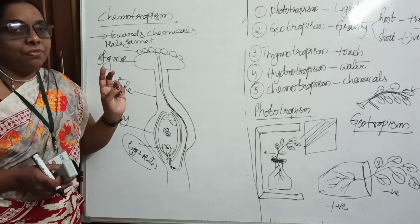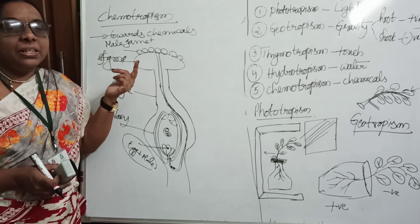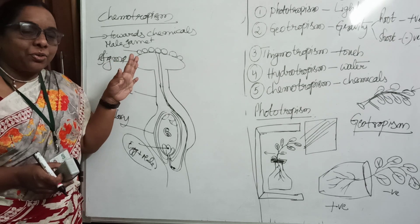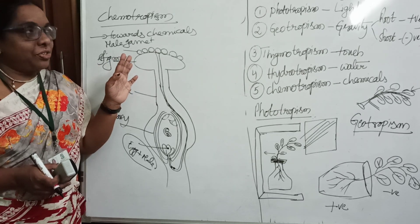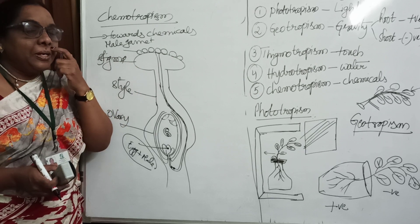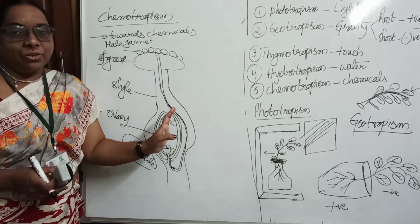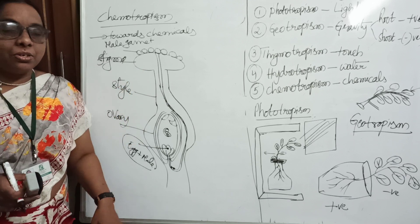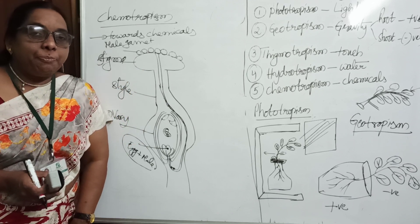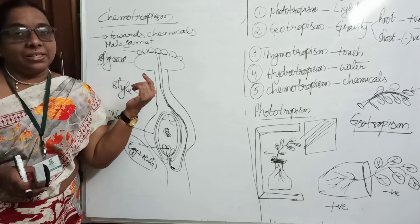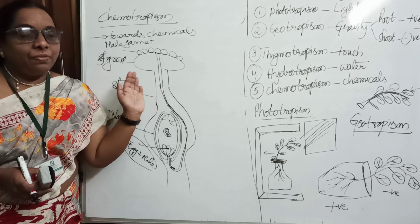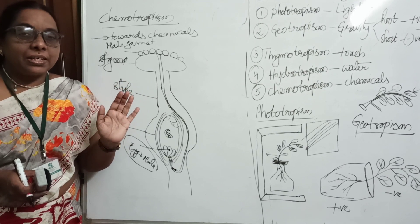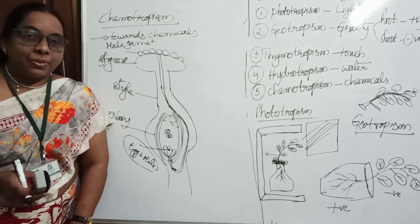Today I explained five tropisms. All tropic movements are directional movements: phototropism, geotropism, thigmotropism, hydrotropism, and chemotropism. All five are important for essay and short answer questions — phototropism especially for essay questions. Draw diagrams for all of these. I will forward the PDF with key points. Write key points in your notebook. That's all for today — stay safe at home, take care, and prepare well for your exams. All the best, thank you.